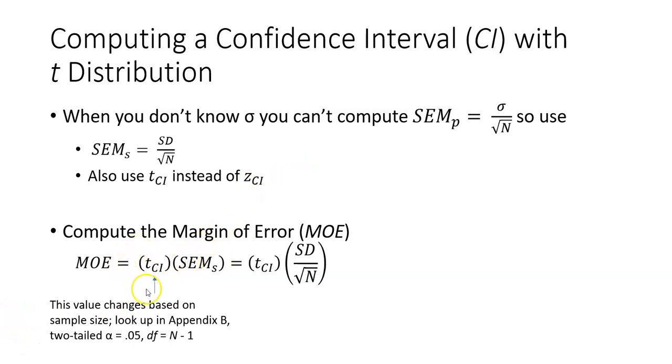When you're working with the margin of error to compute the 95% confidence interval, you're going to be using the error term, which is right there.